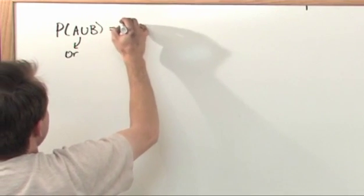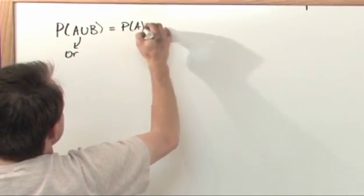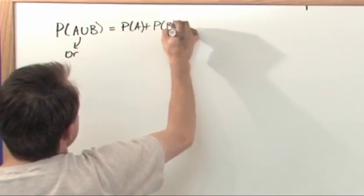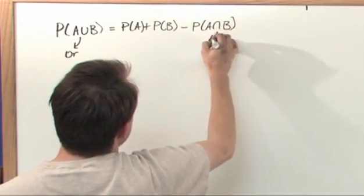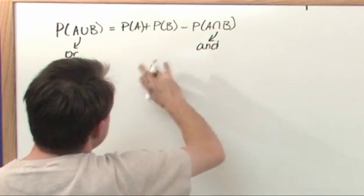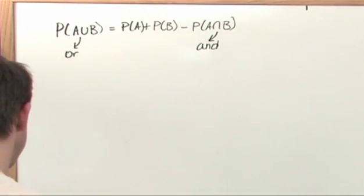And we found out that that was the probability of A plus the probability of B minus the probability of A intersected with B, which is A and B. That's something you can go off and look in the last section and remind yourself of.